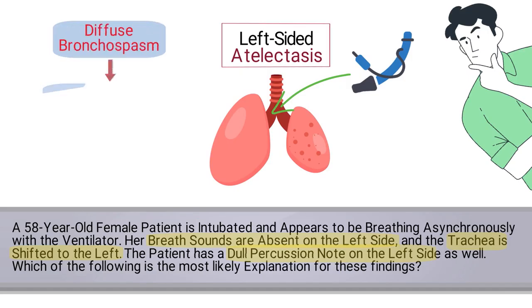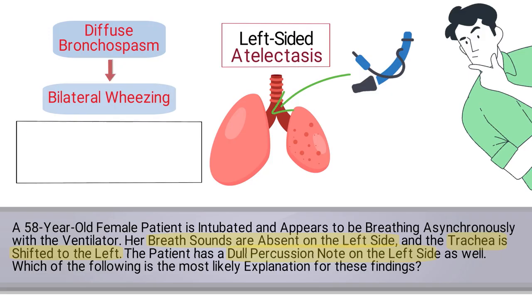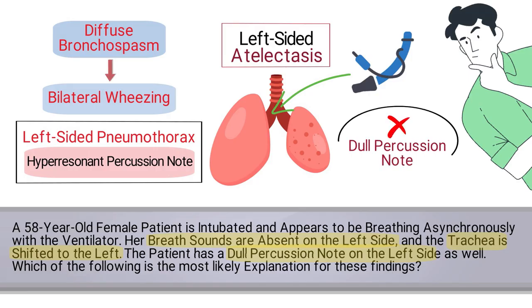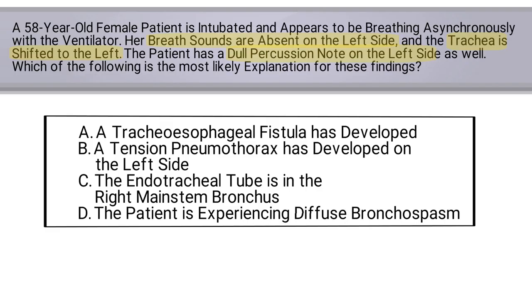Diffuse bronchospasm would cause bilateral wheezing, and a left-sided pneumothorax would cause a hyper-resonant percussion note, not a dull percussion note. So by reading the question carefully and breaking down all the details provided, we can determine that the correct answer is C: the endotracheal tube is in the right main stem bronchus.